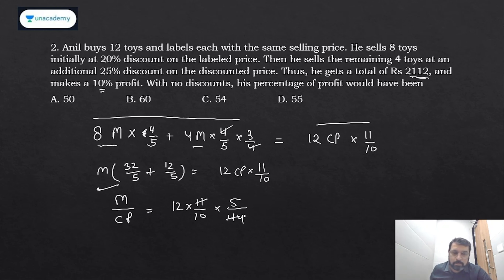That gives you 3/2. That's it. So your mark price and cost price are in the ratio 3:2.